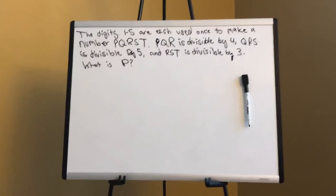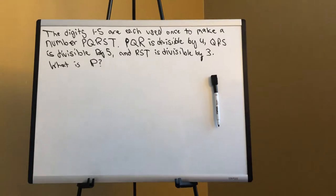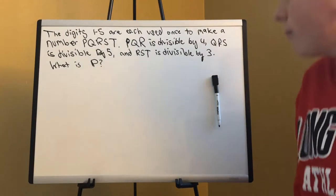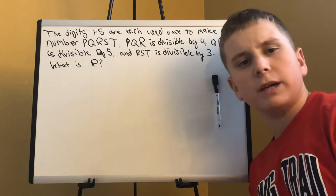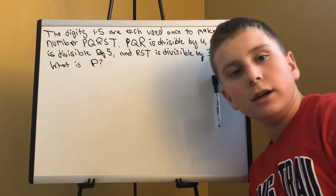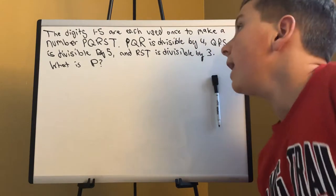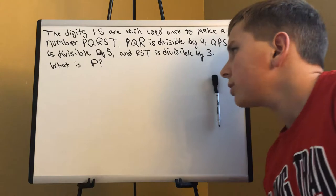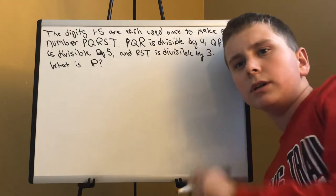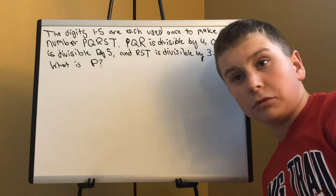Okay. The digits 1 through 5 are each used once to make a number PQRST. PQR is divisible by 4, QRST is divisible by 5, and RST is divisible by 3. What is P? This is logic you are about to witness here. So let's go.